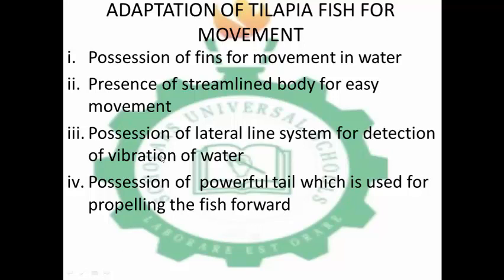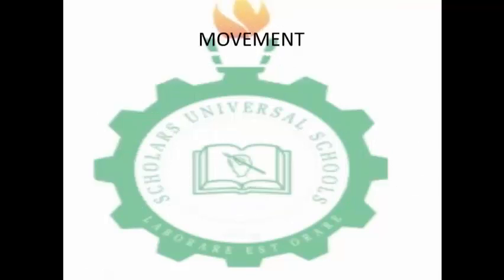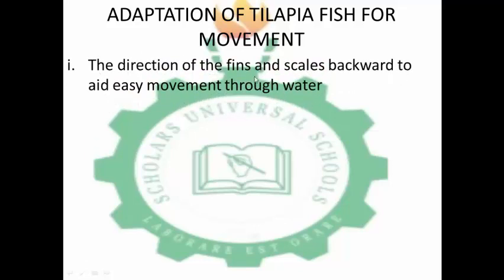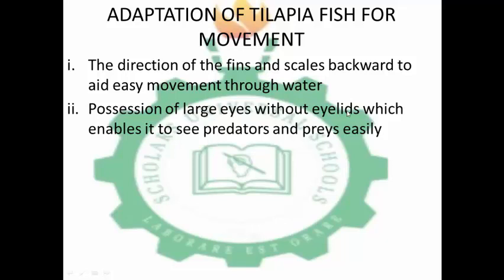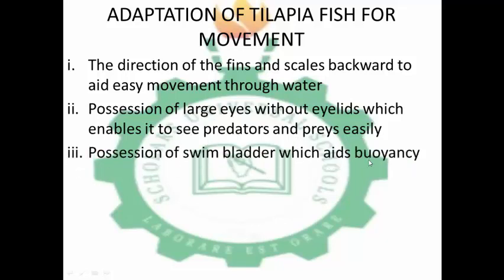The lateral line system allows the fish to detect whether a prey or predator is present in the water. The direction of the fins and scales backwards reduces resistance during movement through water — as the fish moves forward, the fins and scales move opposite to the direction of travel for easy movement. Possession of large eyes without eyelids to enable them to see predators and prey easily. Possession of a swim bladder which provides buoyancy, allowing them to float in water.